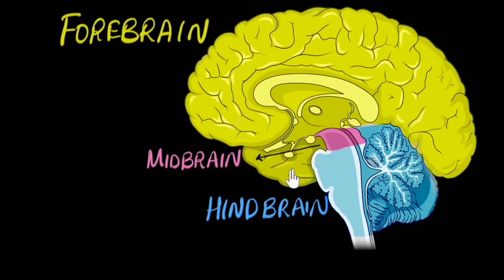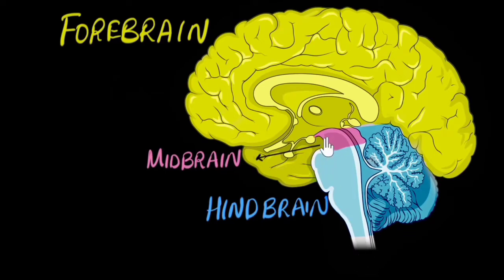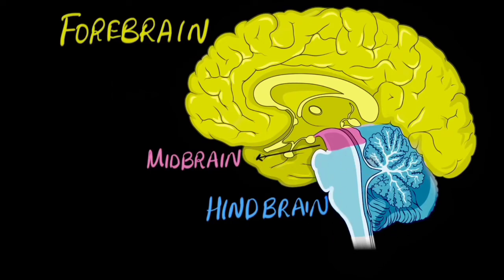Usually when we say humans have a big brain, we're basically talking about this forebrain section. The midbrain is actually the beginning part of the brain stem. The brain stem is what the forebrain sits on top of, and it connects the forebrain to the spinal cord — this continues as the spinal cord. The beginning section of that brain stem is what we call the midbrain, and then the later section is part of the hindbrain. And the hindbrain also consists of this section that looks like a mini brain all by itself.